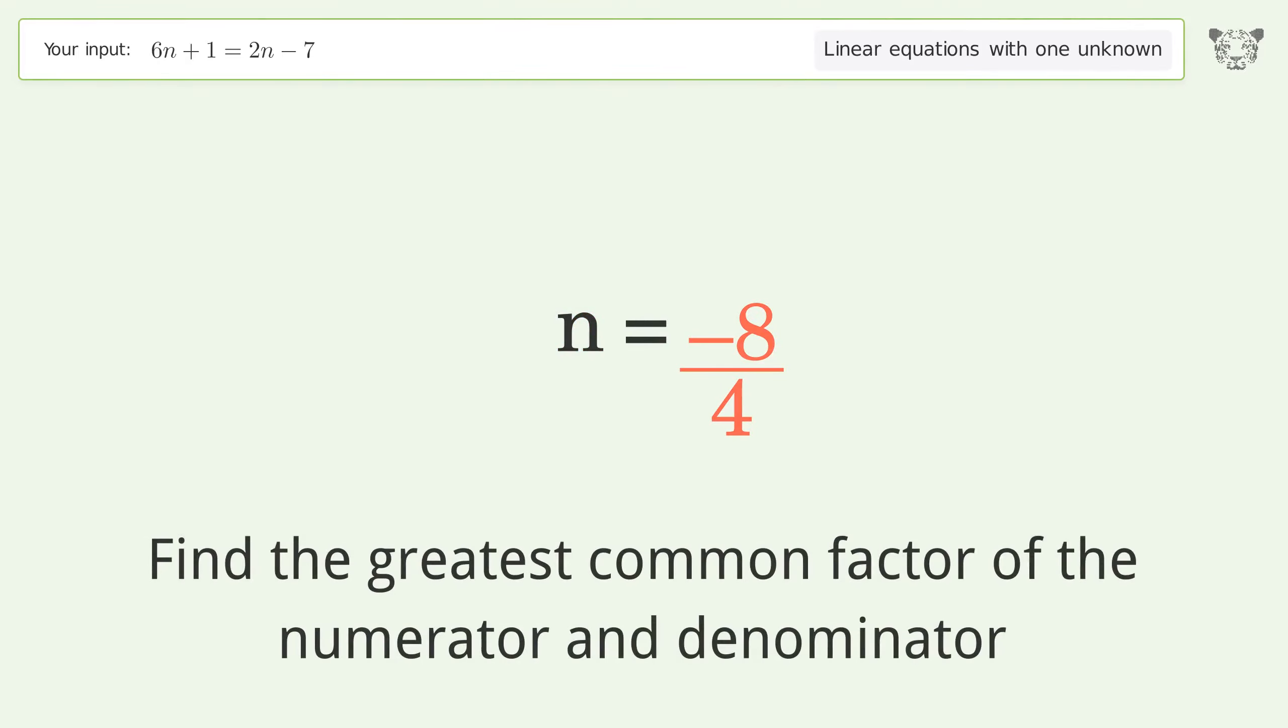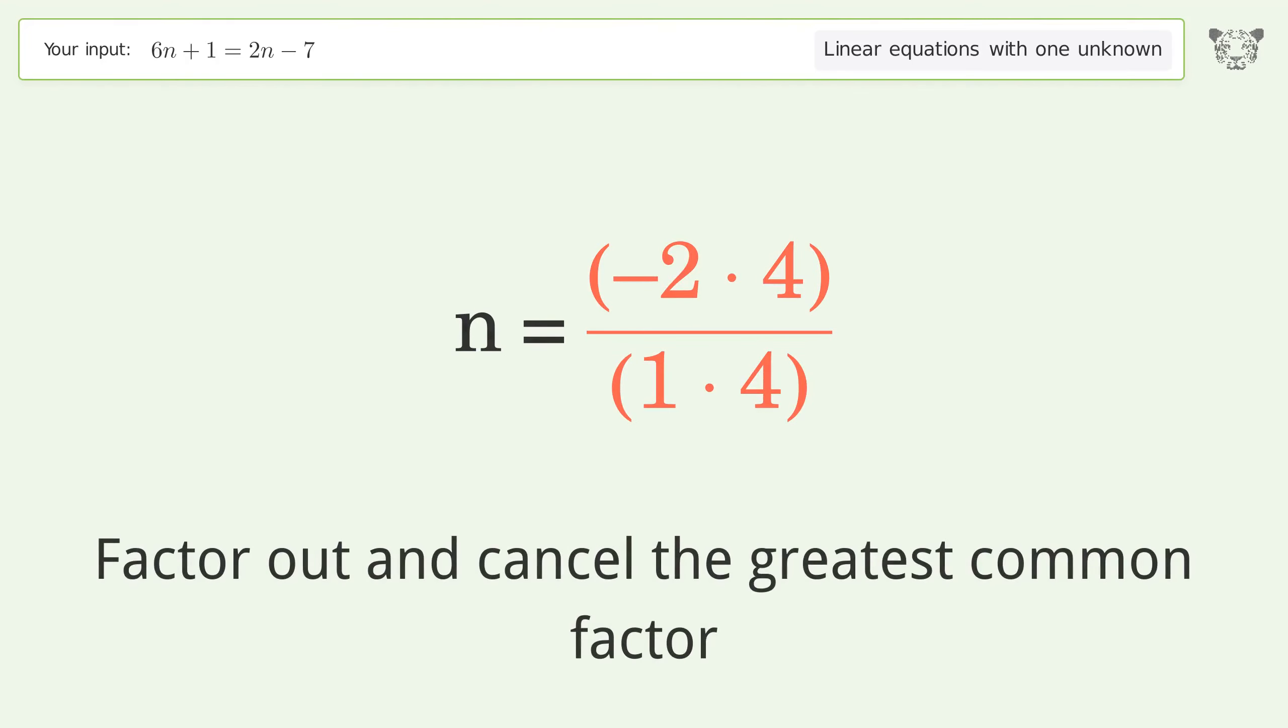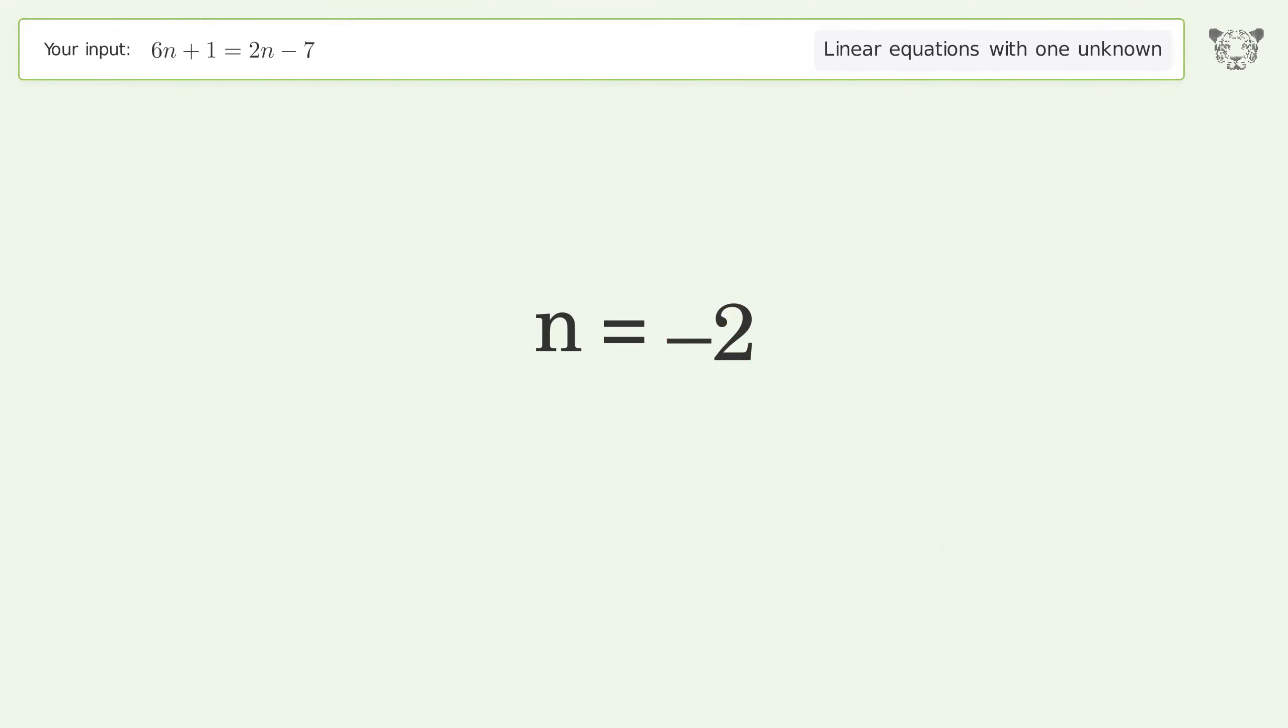Find the greatest common factor of the numerator and denominator. Factor out and cancel the greatest common factor. And so the final result is n equals negative 2.